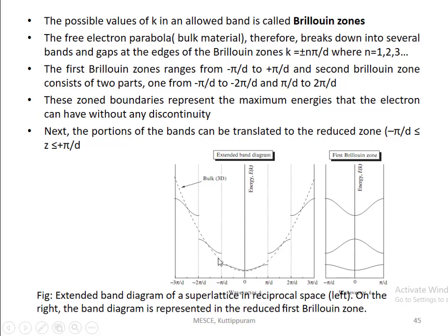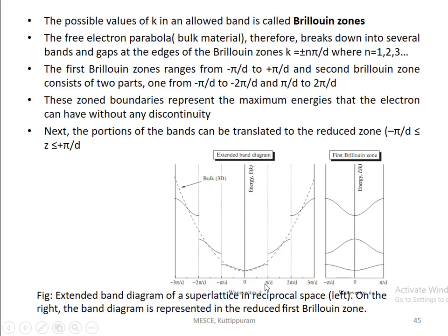After each band, there will be a gap — a forbidden gap. The region outside the range is a forbidden gap, and the region inside is an allowed band. The first Brillouin zone boundary is at ±π/d. The first Brillouin zone represents the maximum energy that an electron can have without any discontinuity.